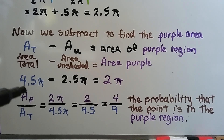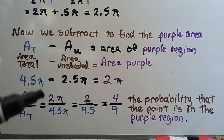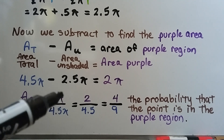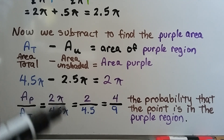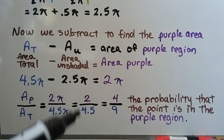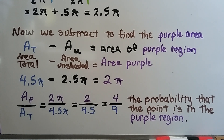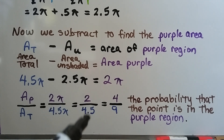The area of the purple region divided by the total area is 2 pi divided by 4.5 pi. The pi cancels, leaving 2 over 4.5. Multiplying numerator and denominator by 2 gives us 4 ninths — that's the probability that the point is in the purple region.